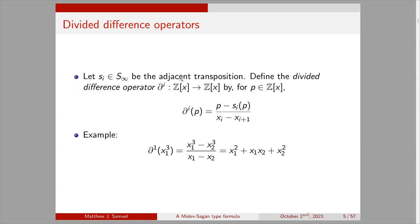Next I'll define the divided difference operators. Let s_i be the adjacent transposition for some positive integer i. We define a divided difference operator ∂_i, which sends polynomials to polynomials, by: ∂_i(p) = (p − s_i·p) / (x_i − x_{i+1}). For example, applying ∂_1 to x_1³ gives (x_1³ − x_2³)/(x_1 − x_2) = x_1² + x_1 x_2 + x_2².